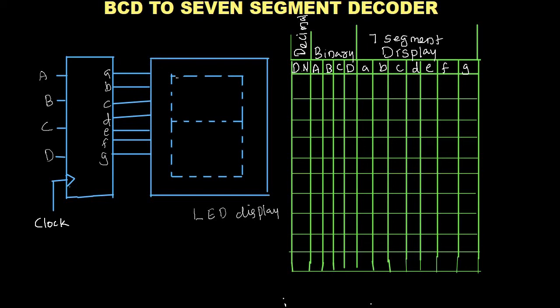In this lecture we are discussing about the 7-segment decoder, that is BCD to 7-segment decoder. I will discuss what a 7-segment decoder is, where it is used, and how we can draw the truth table of a 7-segment decoder. 7-segment decoders are used to display decimal numbers.